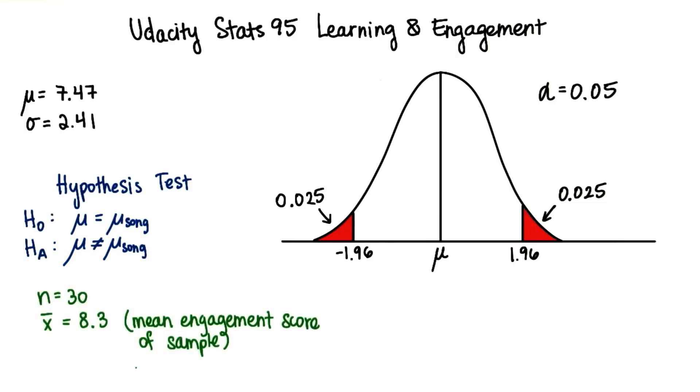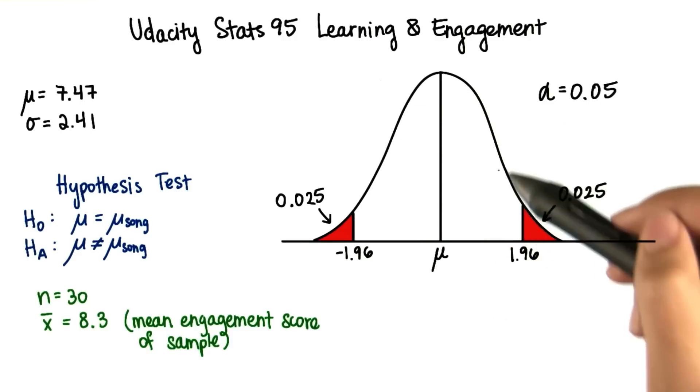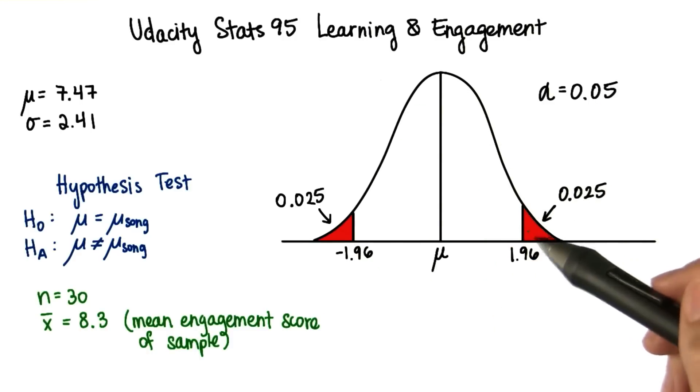Where does this value fall on the distribution of sample means for all samples of size 30? To answer this, remember that this normal distribution represents the distribution of sample means.